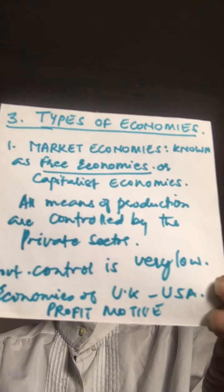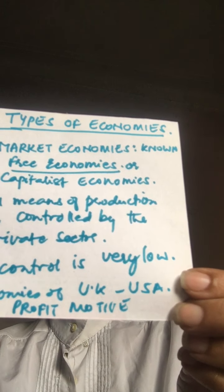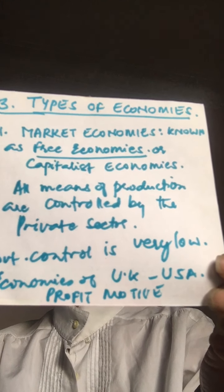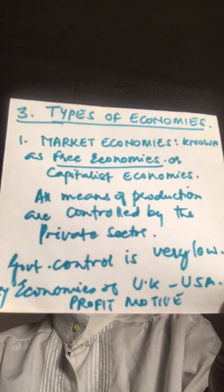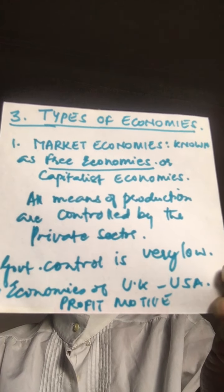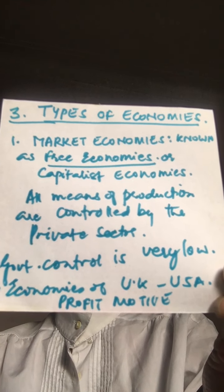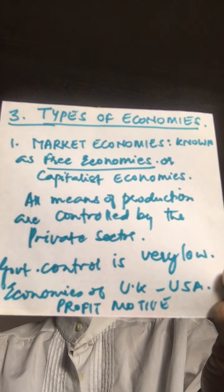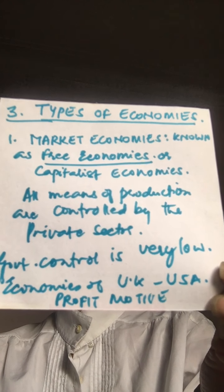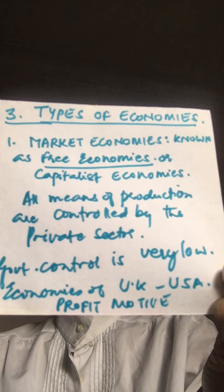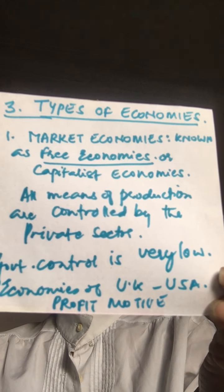The first type is the capitalist economy, also known as a free economy. These are economies where economic activities are controlled by market forces — that is, the demand and supply of a commodity. It is demand that determines what should be produced, because the capitalist economy is driven by profit motive. So the consumer is the king — sovereign.